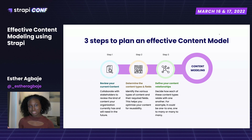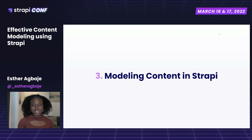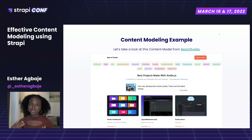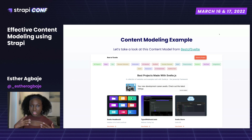When you've completed all three of these steps, you can be sure that you're on your way to creating an effective content model. In order to properly visualize this and move from theory to practical, this site, Best of Vels.js, is going to help us have a practical and visual insight into content modeling before we go ahead to build it out in Strapi.